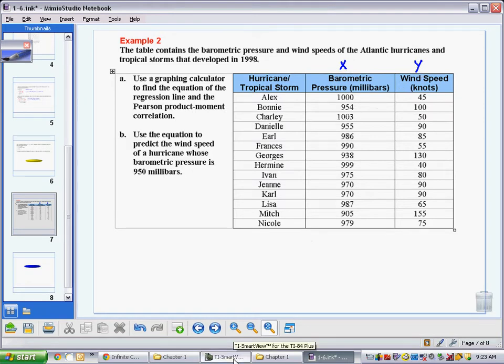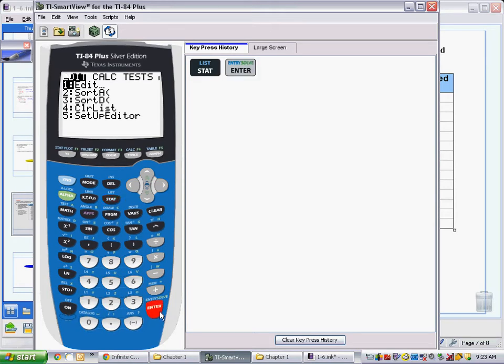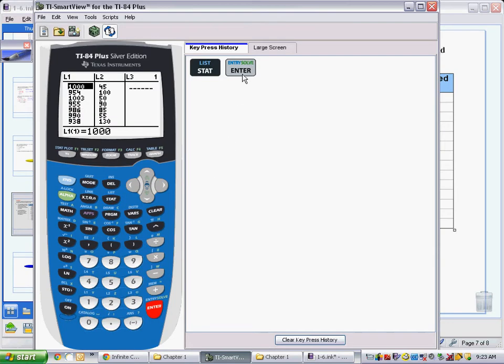Going to my graphing calculator, I will go to the stat menu to enter this information in. From stat, I choose edit, which is my first option, so I press enter. And I am now at a list screen.